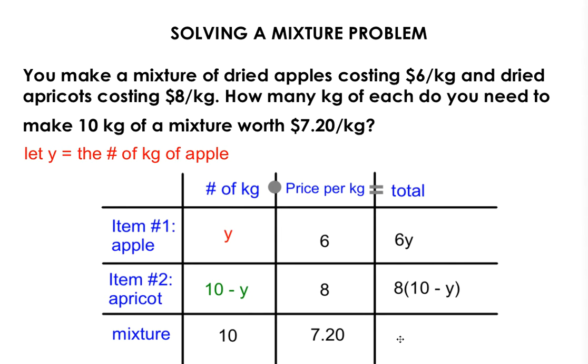And for my mixture, it's the product of 7.20 and 10. So that's how you would populate the table. Let's move on to the next phase of writing your equation and actually solving the word problem.